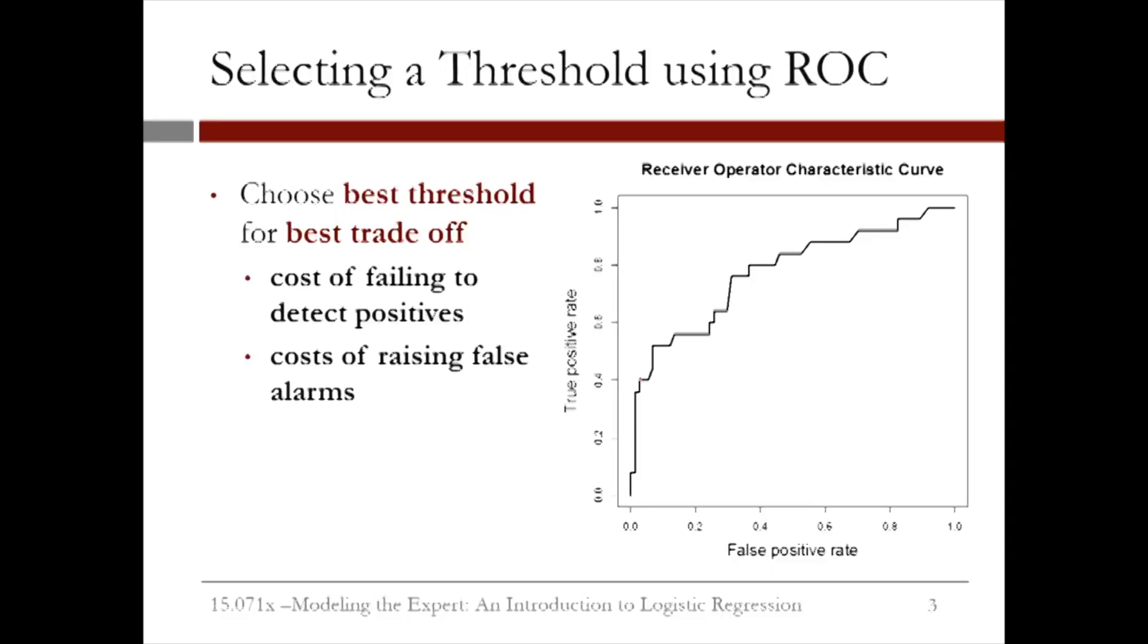A threshold around (0.1, 0.5) on this ROC curve looks like a good choice in this case.